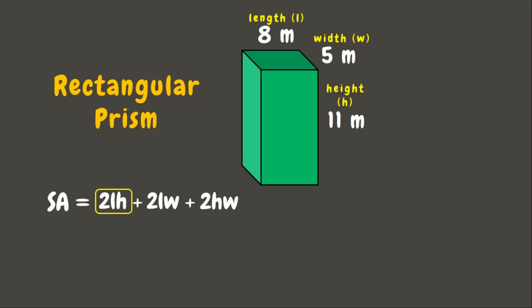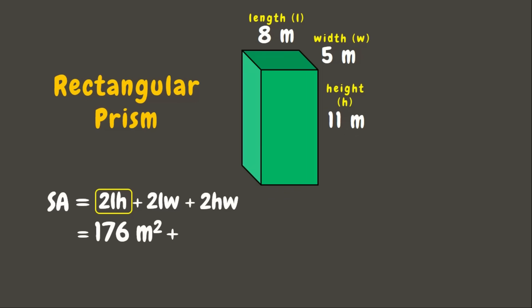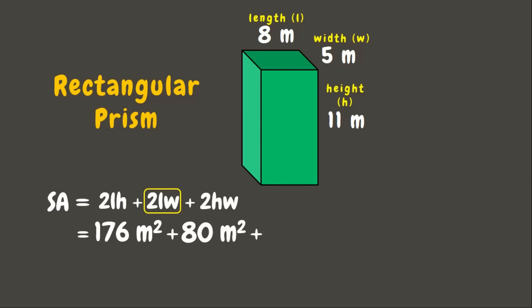First, we have two times the length, which is 8 meters, times the height, which is 11 meters — and if we solve for this one we'll get 176 square meters. Next, let us multiply 2 times the length, which is 8 meters, times the width, which is 5 meters — and we'll get 80 square meters.